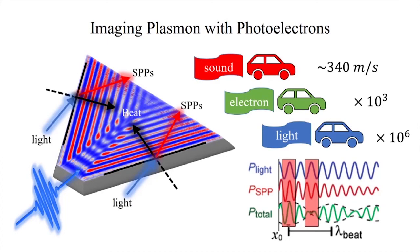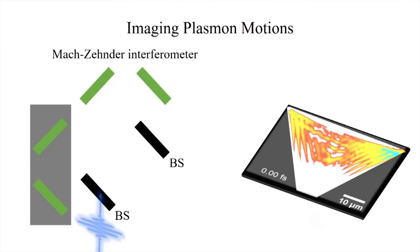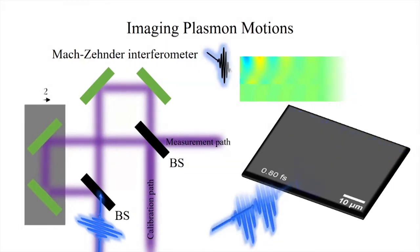To record the actual surface plasmon polariton motion, we use excitation with identical pulse pairs, which are produced by a Mach-Zehnder interferometer. The interferometer can control and scan the delay between the two pulses with precision of a few tens of attoseconds.